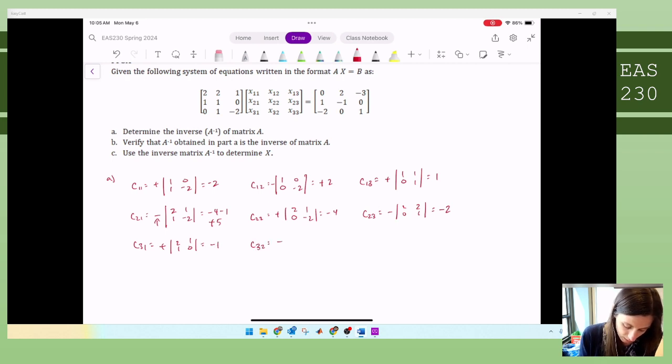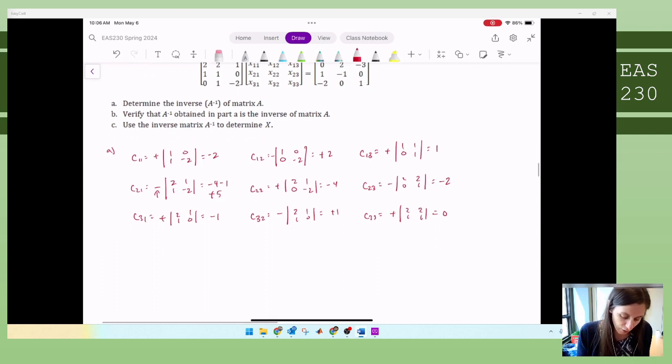C32 is negative 2, 1, 1, 0. Which is negative 1 turned positive, and C33 is positive 2, 1, 2, 1. And that's zero because they're the same two columns, same two rows. So determinant properties, if two columns or two rows are identical, the determinant is zero.